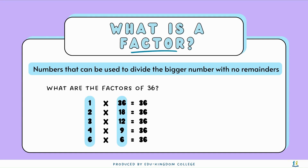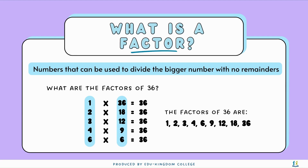The factors of 36 will be numbers that times together to make 36. So we have 1 times 36, 2 times 18, 3 times 12, 4 times 9, and 6 times 6.